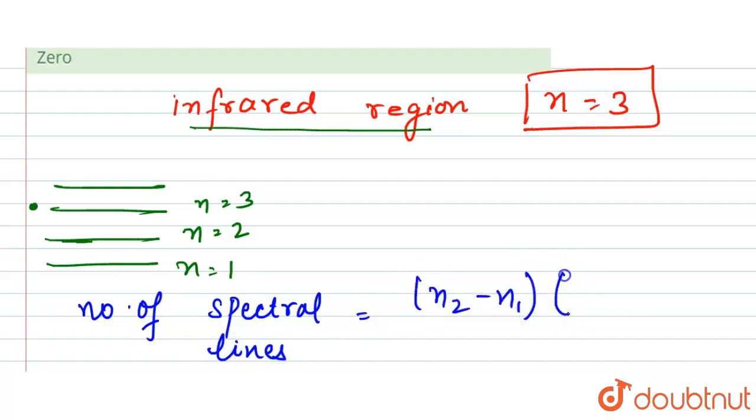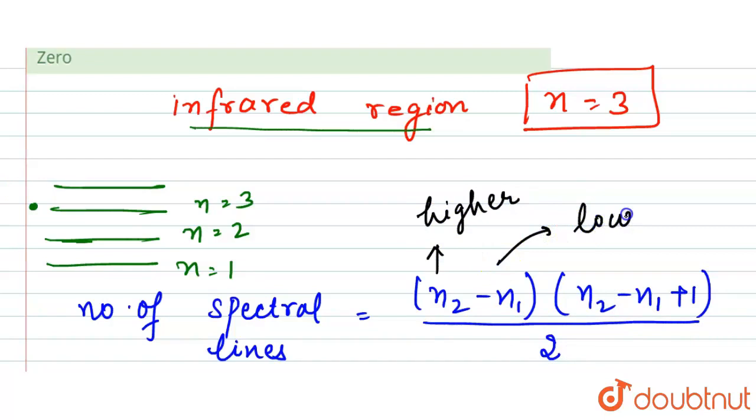Here n2 is the higher orbital, n1 is the lower orbital. It means that in the case of infrared, here our n1 is 3 and n2 is 7.